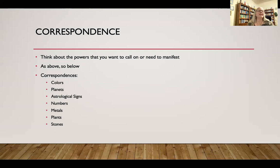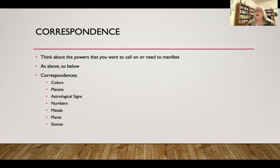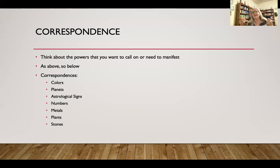For example, if you were trying to find a job, you might want to pull in Jupiter energy, use blue, and include expansive herbs. I often use white oak bark and kava kava together for manifestation — white oak bark tends to increase the power of things, and kava kava tends to make it happen fast. I'd add those two along with the herb most closely aligned with what I was trying to manifest.